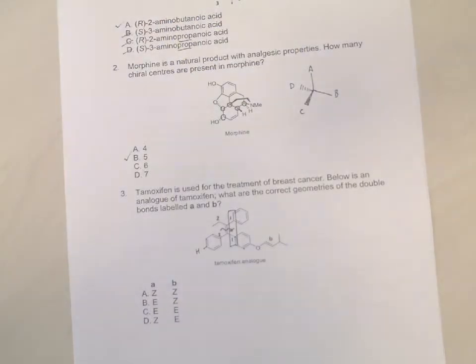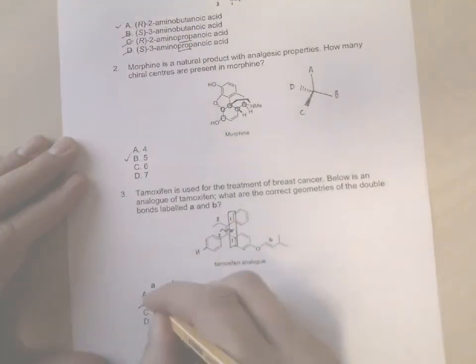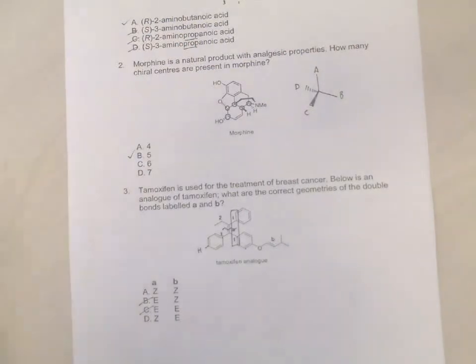So oxygen has a higher priority than hydrogen, so this side will take priority one over this side which takes priority two. And you notice that both the highest priority numbers are on the same side, so A is a Z double bond. So that means we can get rid of B and we can get rid of C as an option because A is Z.